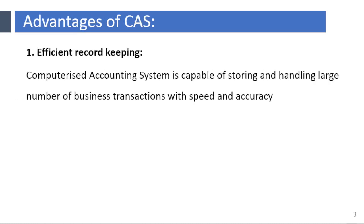Efficient Record Keeping. Computerized Accounting System is capable of storing and handling a large number of business transactions with speed and accuracy.